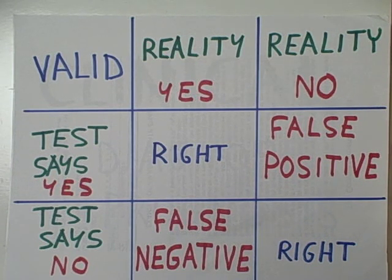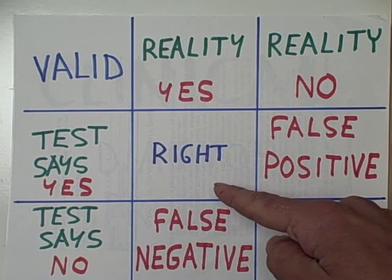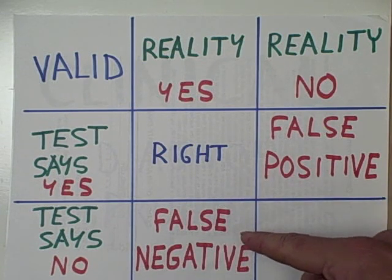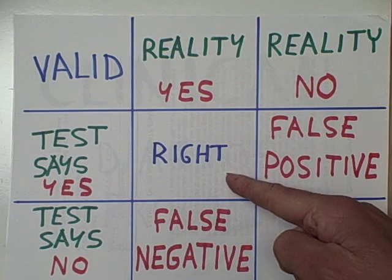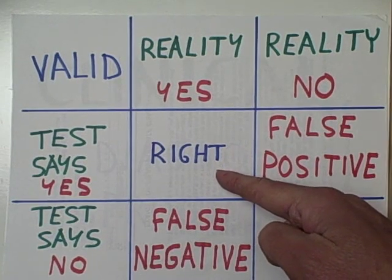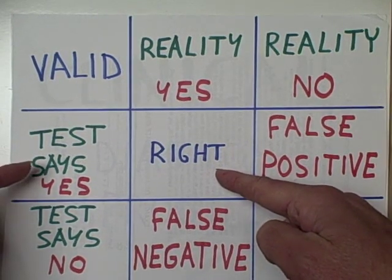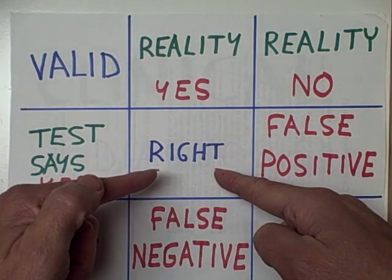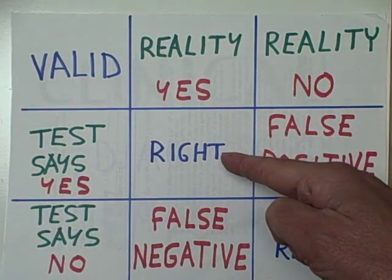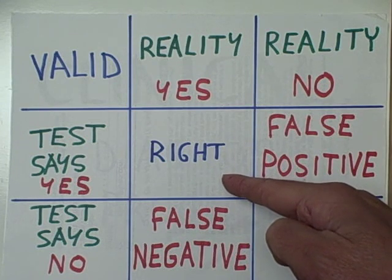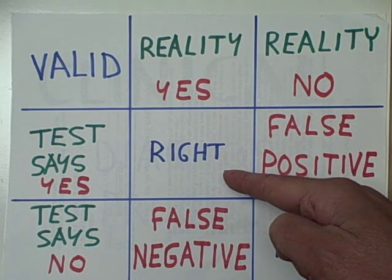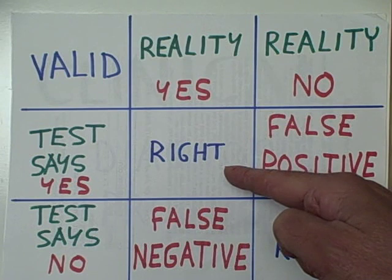Therefore, we're going to have four different cells and each case will be classified into one of these four cells. Here we are going to put those patients who the test says yes, the disorder is present and who actually have the disorder. Every case in this cell, the diagnosis made by the new test was the right diagnosis. The patient really had the disorder.